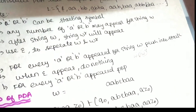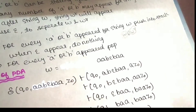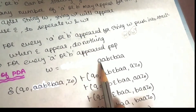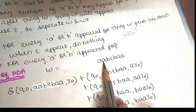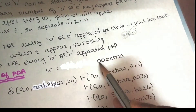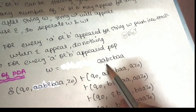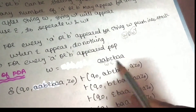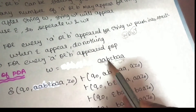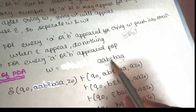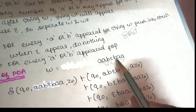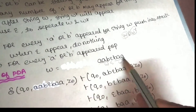Let me give you an example. W is equal to A, A, B. If you look at this, W epsilon — the reverse W^R is B, A, A. So this reverse is B, A, A. Okay?